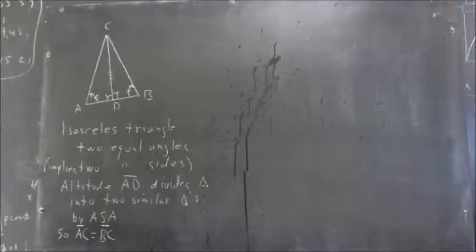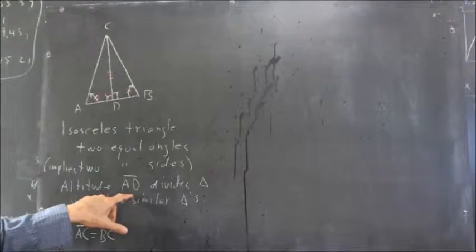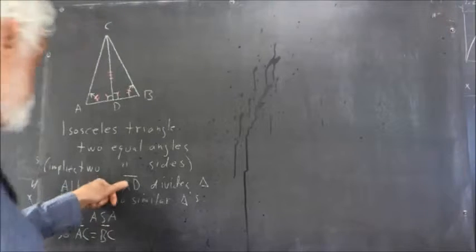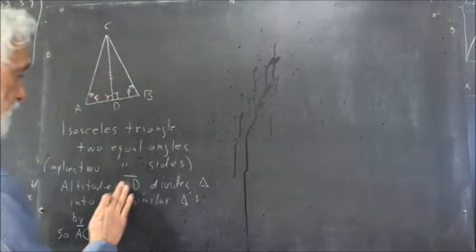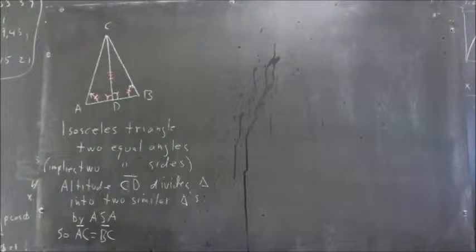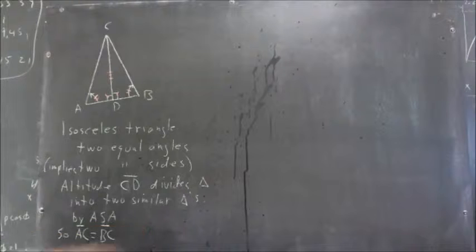Okay, well, hopefully paused and thought that through. But I'm going to say, first of all, the altitude AD, the altitude is CD, not AD. Okay, the altitude CD divides the triangle into two similar triangles. I claim that.